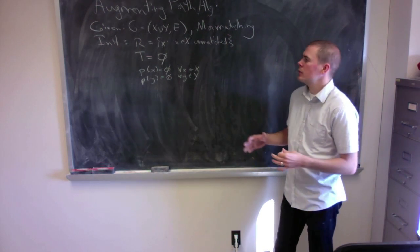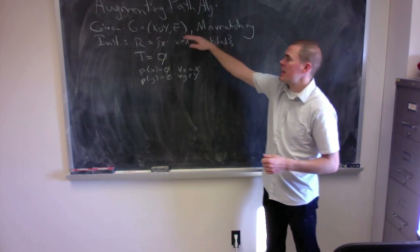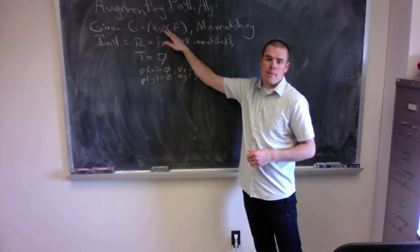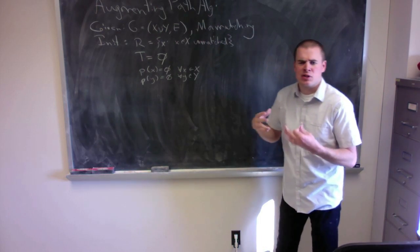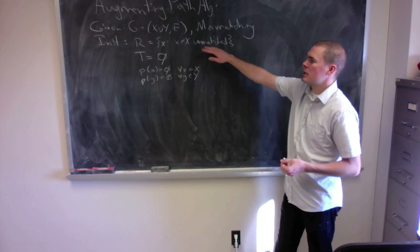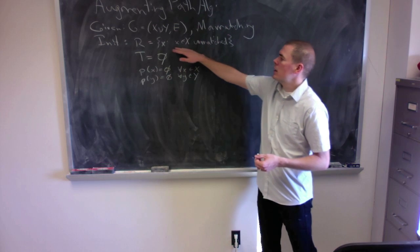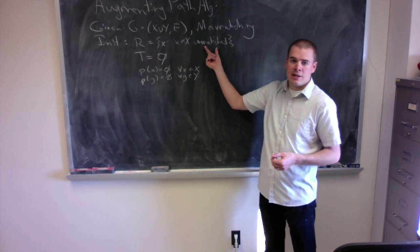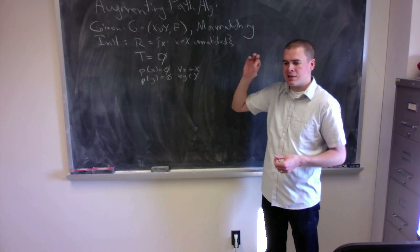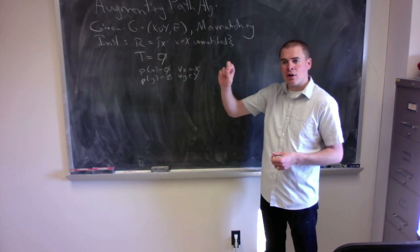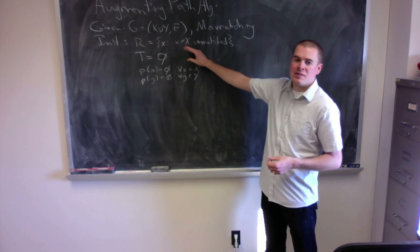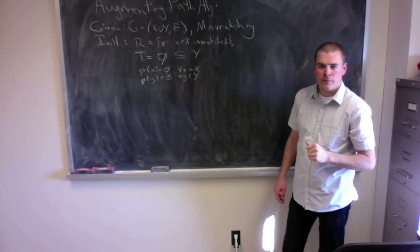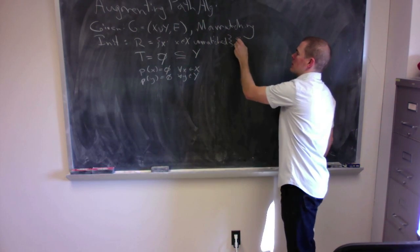To start our algorithm we are going to be given a matching inside of a bipartite graph G where our bipartition is X union Y. We are going to focus on X as the place where we start all of our augmenting paths. I am going to initialize R with all vertices x such that x is in X and is an unmatched vertex. T will be an empty set — T is always a subset of Y and R is always a subset of X.